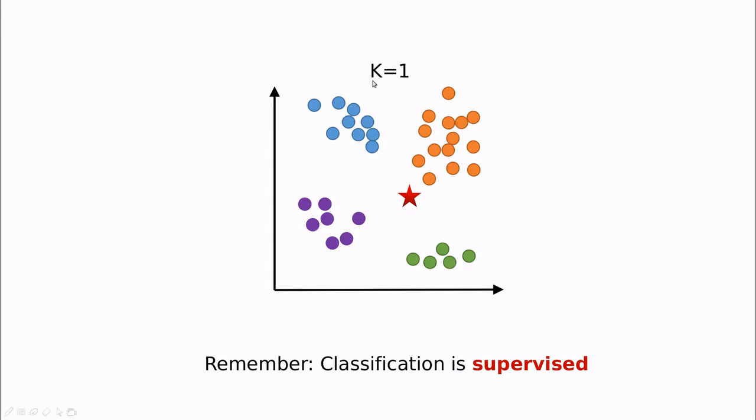In this case, we are going to use k equals 1, meaning that we're going to find the closest one, the nearest neighbor in this diagram, according to some distance. Here is the Euclidean distance, and in this case, the closest one is this orange spot. So we're going to classify this star as orange.